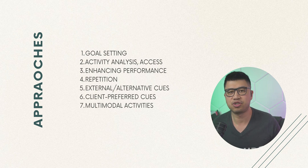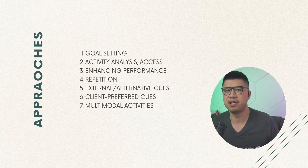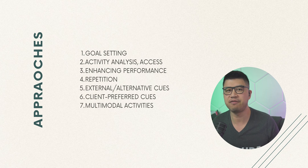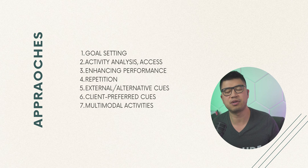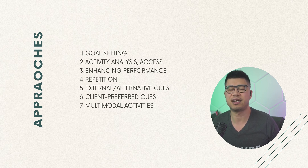There are seven goals you can address for someone with PD. One: goal setting. Two: activity analysis and access to services. Three: enhancement of performance. Four: repetition, such as movement or cognitive. Five: using external or alternative cues to one's advantage. Six: using client-preferred cues for motor control. And seven: incorporating multimodal activities that are more complex and natural to movement and function, rather than just single isolated activities or movements.